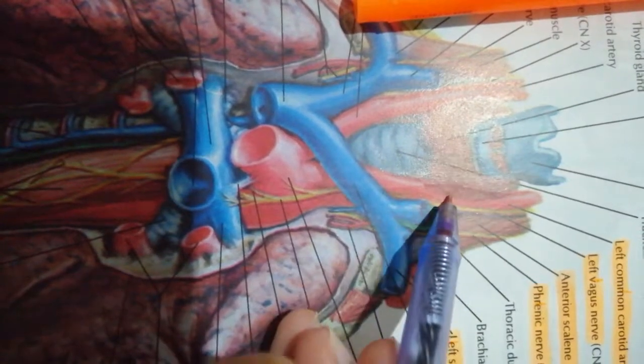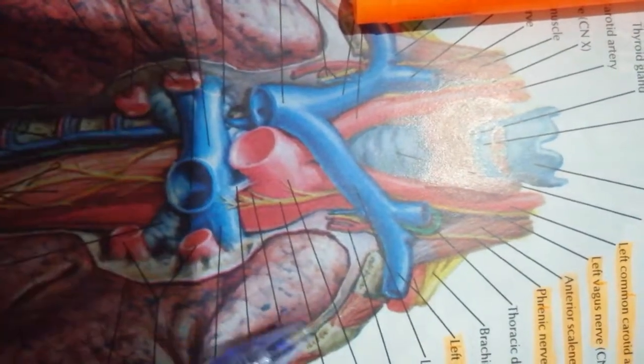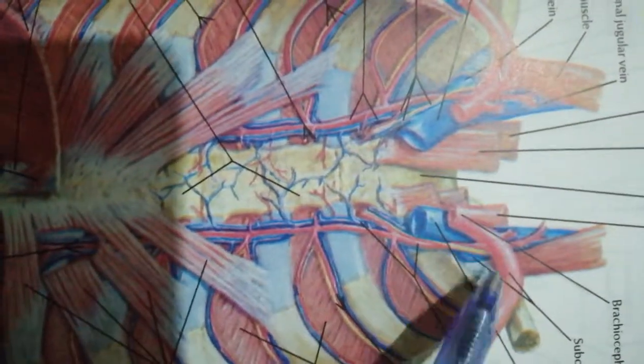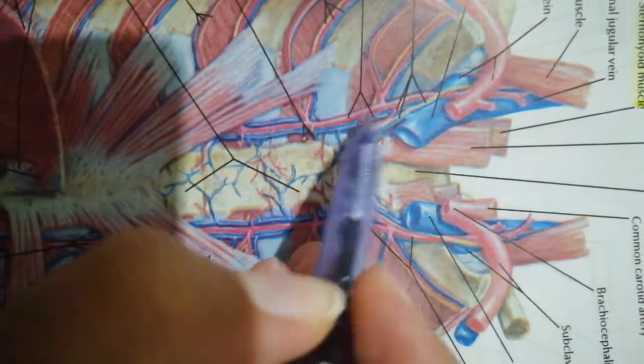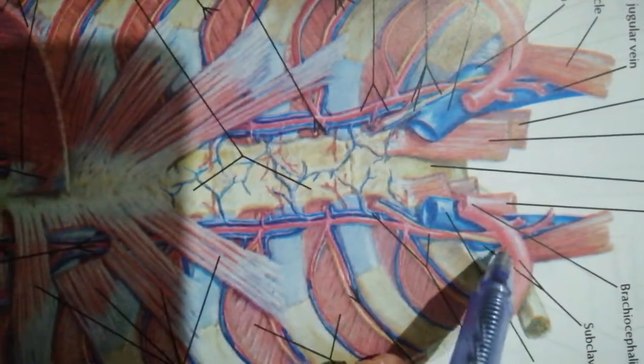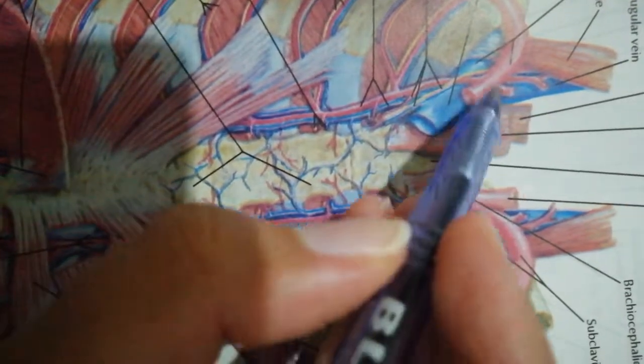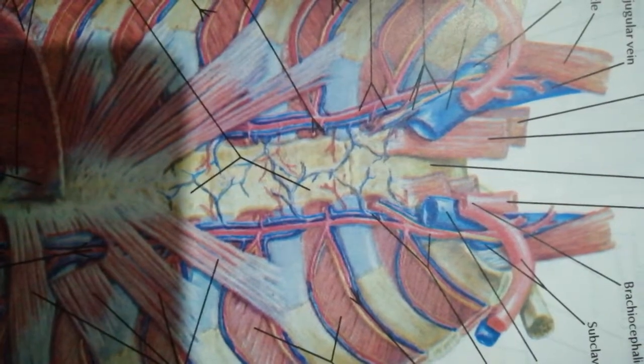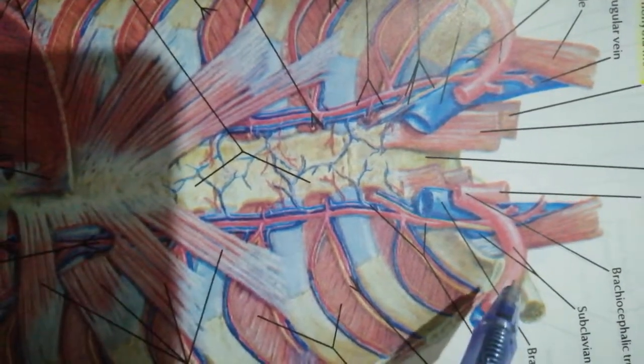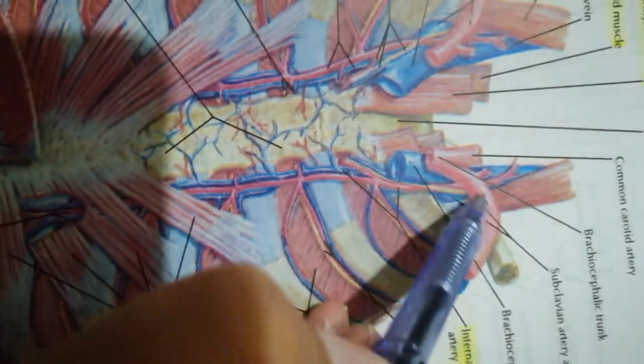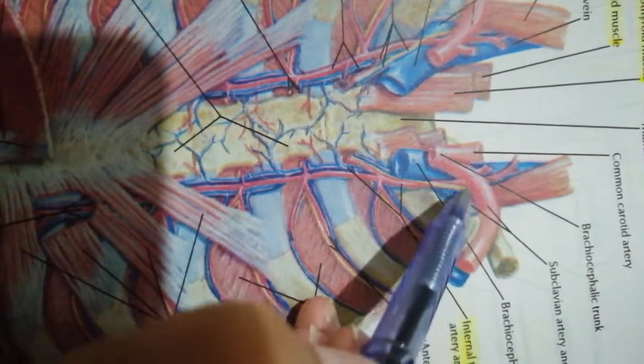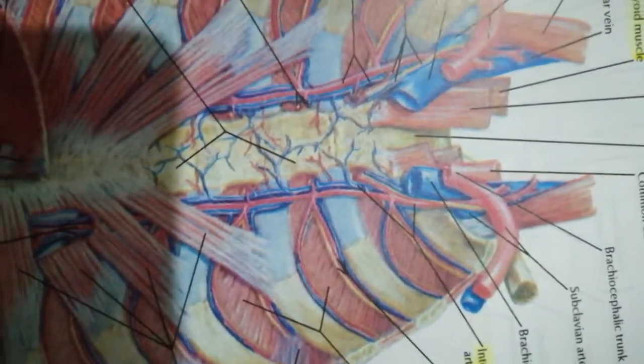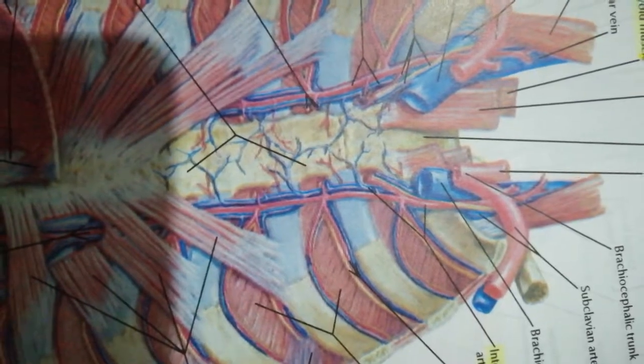As for the minor vessels, we have the right and left internal thoracic vessels which branch off of the corresponding subclavian. We also have the right and left superior intercostal artery which similarly come off of the subclavian, probably from the costocervical trunk.